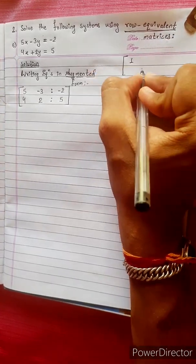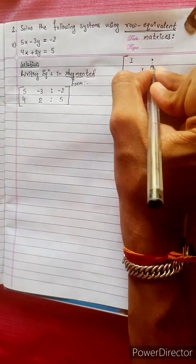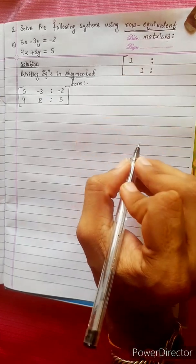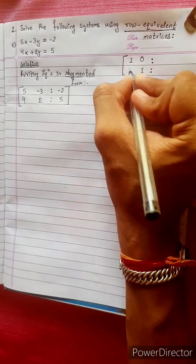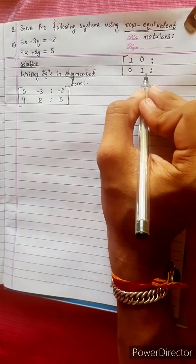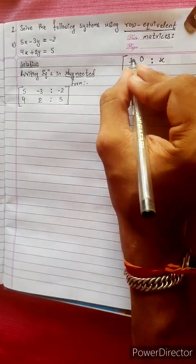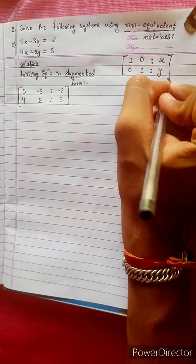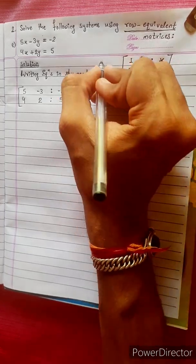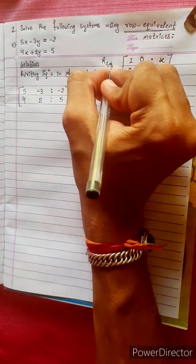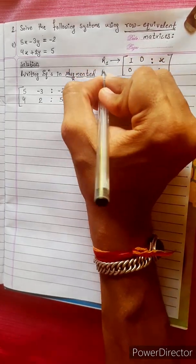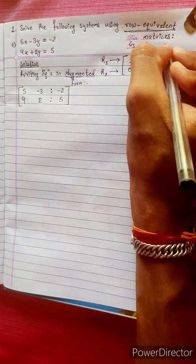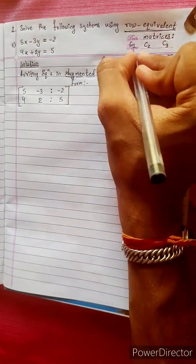The main diagonal is 1. The other entries on the main diagonal are 0. This gives us the values of x and y. This is r1, r2, first column, second column, third column.